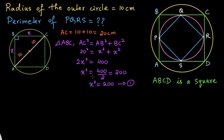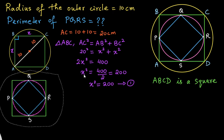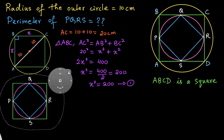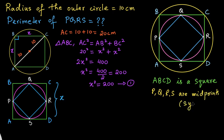Now let us take the inner parts: the green square, the pink circle, and the blue quadrilateral. We have taken the side length of the square as x. Since the square and circle are both symmetric figures, we can safely conclude that P, Q, R, S are the midpoints of the sides of the square — due to symmetry.